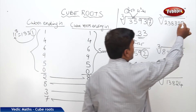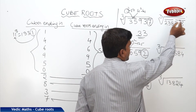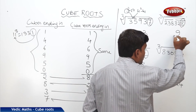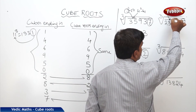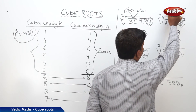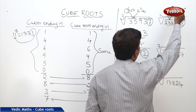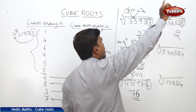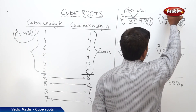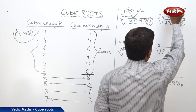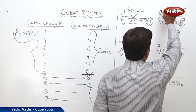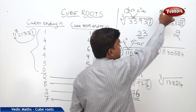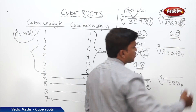Next problem: partition into 3 digits. The cube number ends in 8, so the cube root ends in 2. The second partition is 238. The number 238 comes between 6 cubed (216) and 7 cubed (343). Taking the lesser number, 6, the answer is 62.